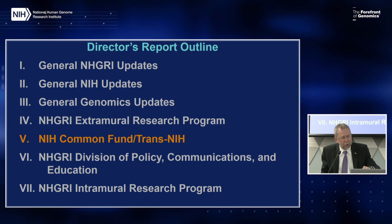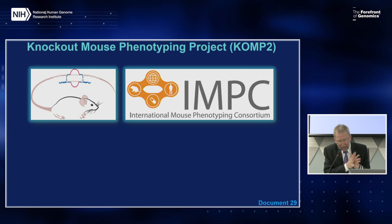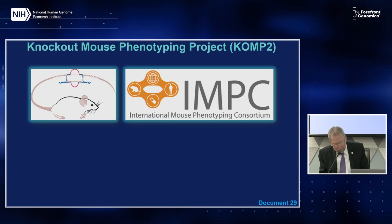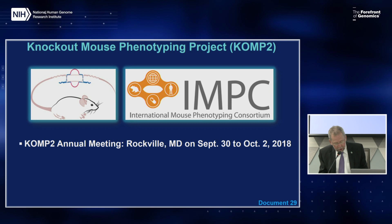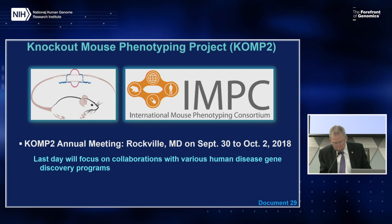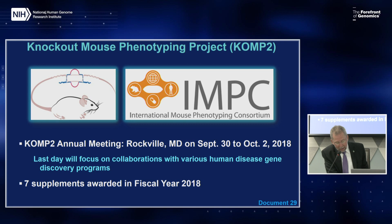Moving to NIH Common Fund and trans-NIH efforts: the NIH Common Fund's Knockout Mouse Phenotyping Project (KOMP2) will create and phenotype 3,000 strains of knockout mice using CRISPR technology between 2016 and 2021, and is on track to meet its goals for fall 2018. KOMP2 is part of a larger international mouse phenotyping consortium (IMPC). This year's annual KOMP2 meeting will be held in Rockville, Maryland on September 30th to October 2nd, with the last day focusing on KOMP2 collaborations with human disease gene discovery programs such as TOPMed, Gabriella Miller Kids First, and ClinGen.